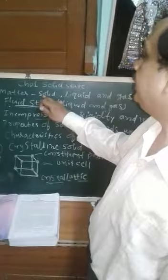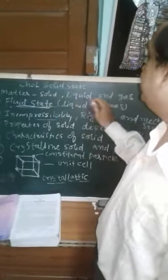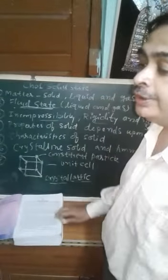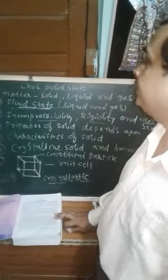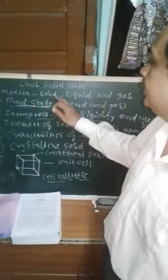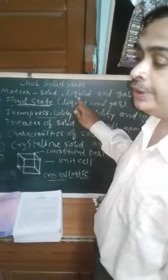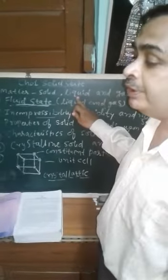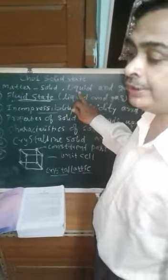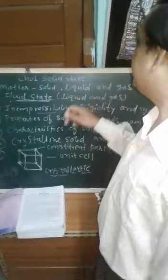It can be classified into 3 types: solid, liquid and gas. Solid is that state which has a definite shape and volume. Liquid is that state which takes the shape of the container in which it is kept.